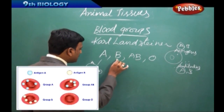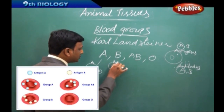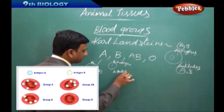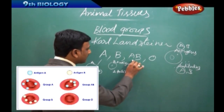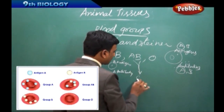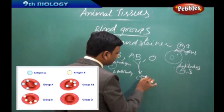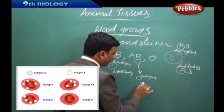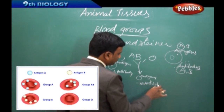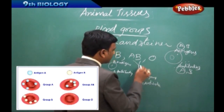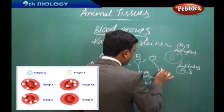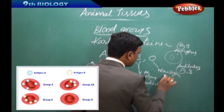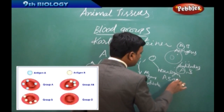Similarly, for blood group B, antigen B is present on the RBC and antibody A is present in the plasma. In the case of AB, both antigens A and B are present and no antibodies. In O group, there are no antigens — only antibodies A and B are present.